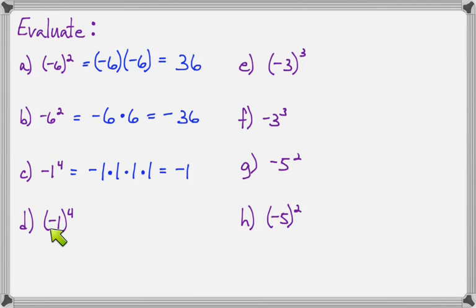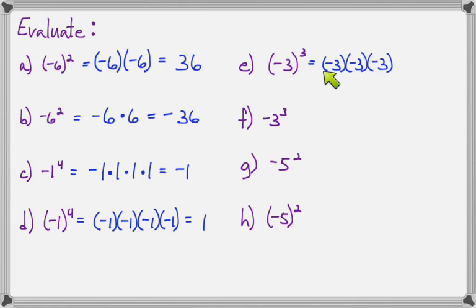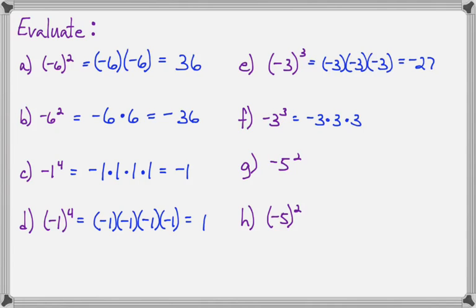On part D, negative 1 is the base because when it's in parentheses, the exponent works on everything in the parentheses. So it's negative 1 times negative 1 times negative 1 times negative 1 — four negative signs make a positive answer. On part E, negative 3 to the third power is in parentheses, so negative 3 is the base. Put it down three times — three negative signs make a negative answer. 3 times 3 is 9, and 9 times 3 is 27. But on part F, there are no parentheses. The negative goes down one time and the base is 3, so 3 goes down three times. 3 times 3 times 3 is still 27, but there's a negative in front, so it's negative 27.